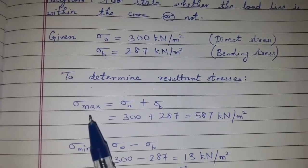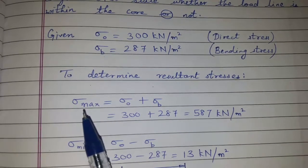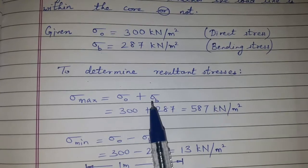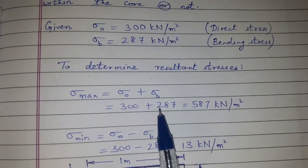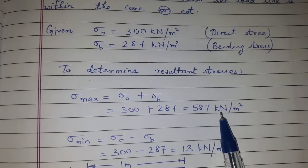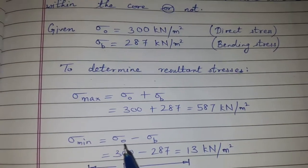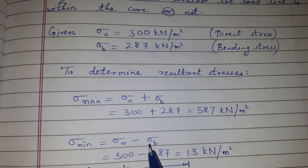The formula for resultant stresses is sigma max equals sigma 0 plus sigma b. Here we get 300 plus 287, that is 587 kN per meter square.